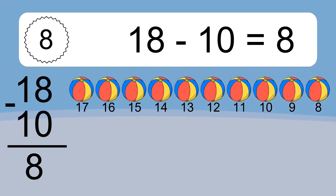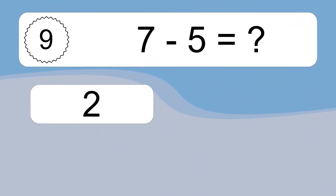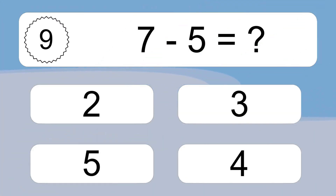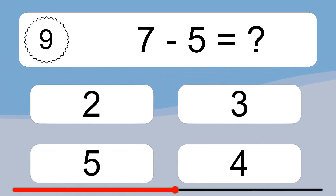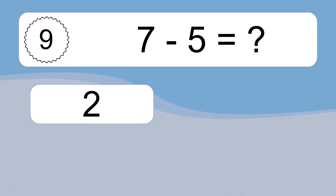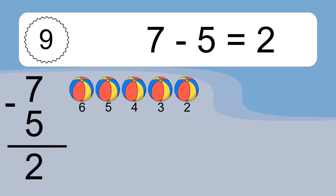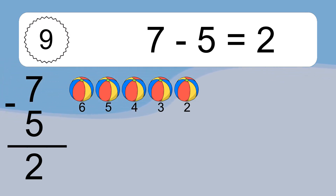7 minus 5 equals what? 7 minus 5 equals 2. Let's count it: 6, 5, 4, 3, 2.